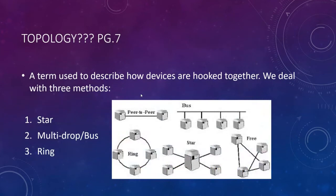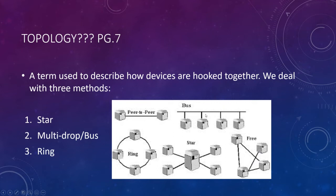Topology describes how devices are put together. The three ways we look at are called star, multi-drop bus, and ring — the names do a good job of describing them. Peer-to-peer, as we've discussed, is one machine to one machine. Bus or field bus is a trunk with drops. Ring is self-explanatory: all devices configured in a ring, data going from one to the next.